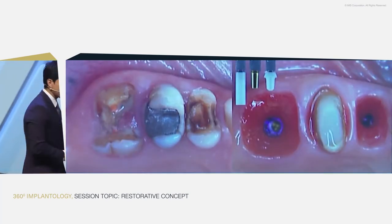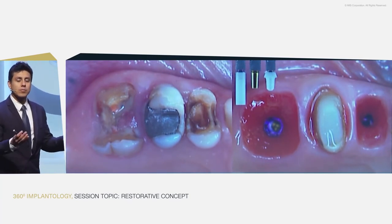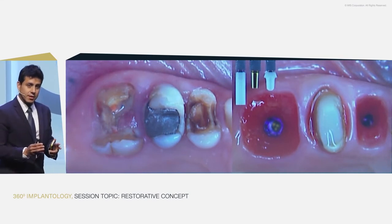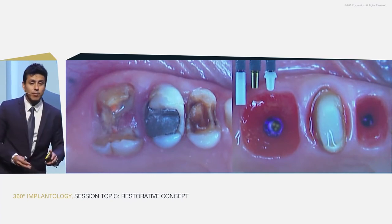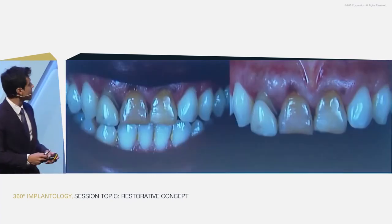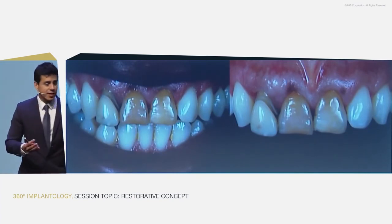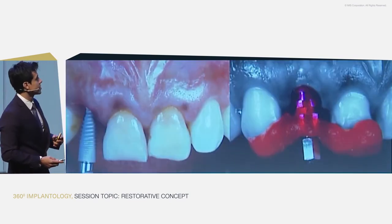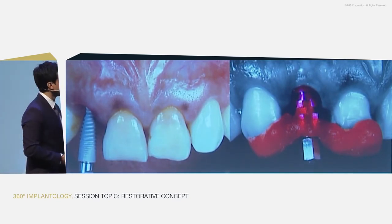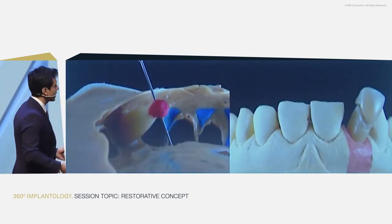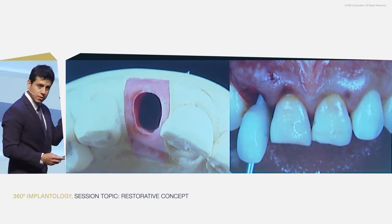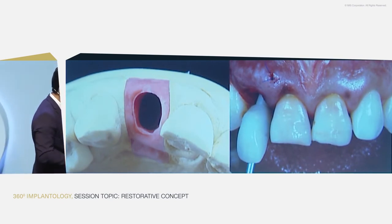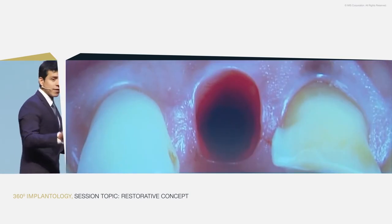In situations like this, our group prefers to use a tie base with lithium disilicate or zirconia in the monolithic way. Now let's see an anterior clinical case. The patient needed extraction of the lateral incisor and veneers on the anterior area. We removed the lateral, created our jig with wings, made the provisional following the rules mentioned, using MIS plastic cylinder provisionals, and achieved this kind of tissue after four months.